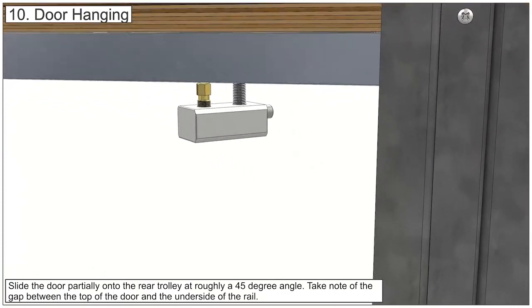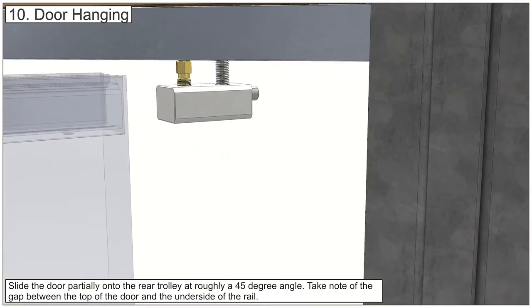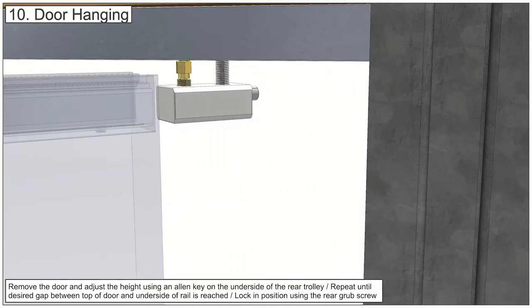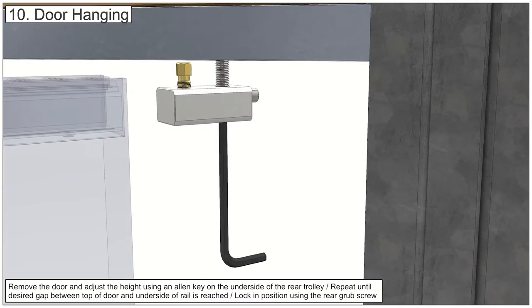At an angle of approximately 45 degrees, slide the door partially onto the rear trolley assembly. The gap between the top of the door and underside of the top rail needs to be between 3mm to 10mm.